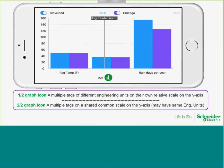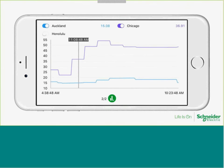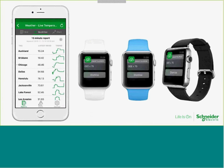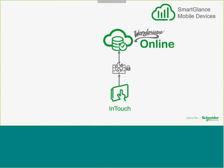When looking at multiple tags, you can use different engineering units on their own relative scale, and multiple tags can use a common Y-axis if they share the same engineering units. You can also slide along a cursor to see the current time and actual values — the same capability as the online Insight tool. You have a trend local to your pocket, with plant or machine information at your fingertips at all times. SmartGlance has many different form factors — your iPhone, Android phone, or a smartwatch can also be a client tool for Wonderware Online.